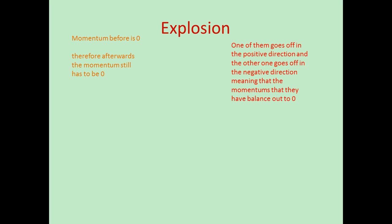That was a basic example — in reality there'd be many pieces going off in different directions, but altogether they would equal 0. If both parts are the same mass and going off in opposite directions, they will have opposite velocities. So one might have 5 arbitrary units per second, and the other would have minus 5 arbitrary units per second.